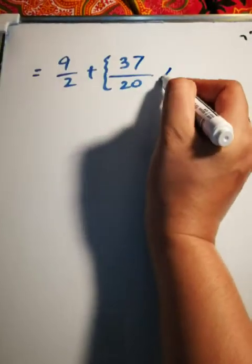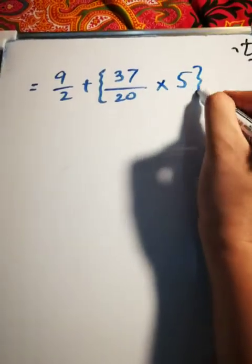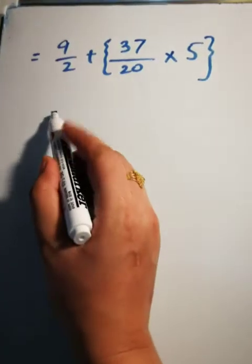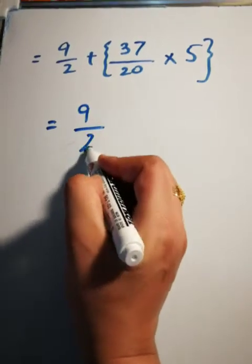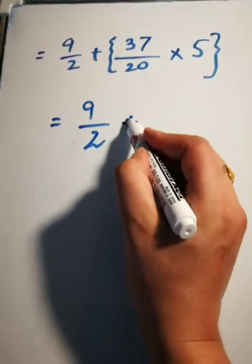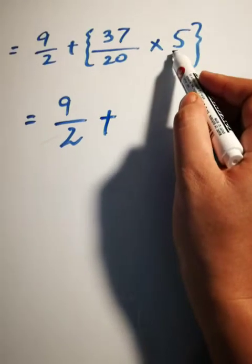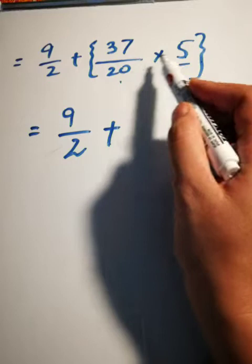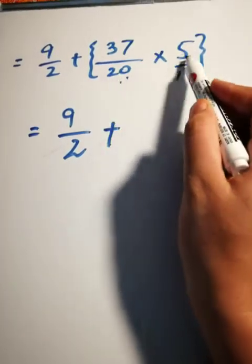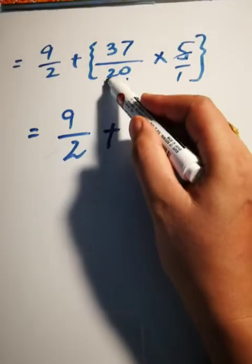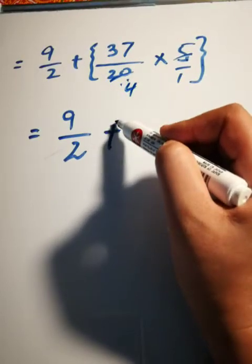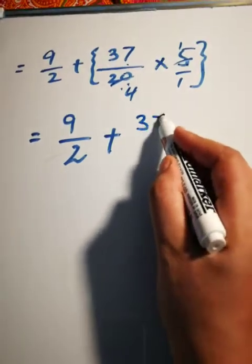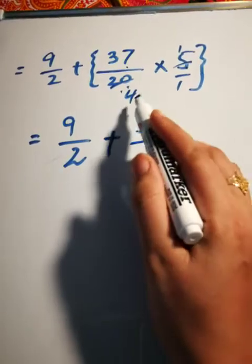9/2 plus 37/20 multiply by 5. Okay, 9/2 plus, 5 times 1 is 5, 5 times 1 is 5, 5 times 4 is 20. And 37 times 1 is 37. 4 times 1 is 4.